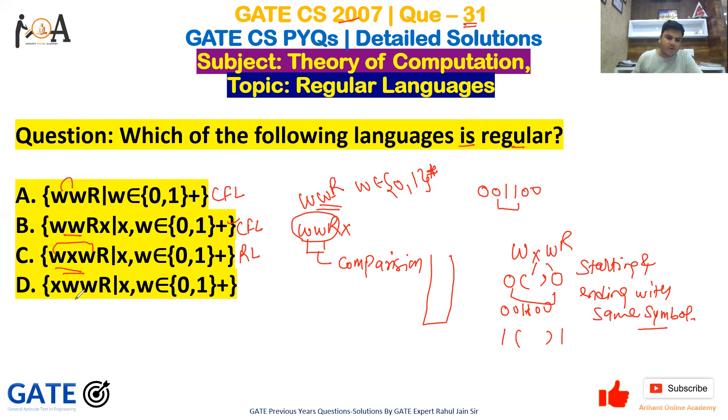If you see option D, that is {wwR}, here again comparison is required because we don't have a central element. We can't recognize where it is basically ending from one side, so comparison is required. So this is also CFL. Which of the following is regular? Option C. This language is a regular language, so option C is the correct answer.